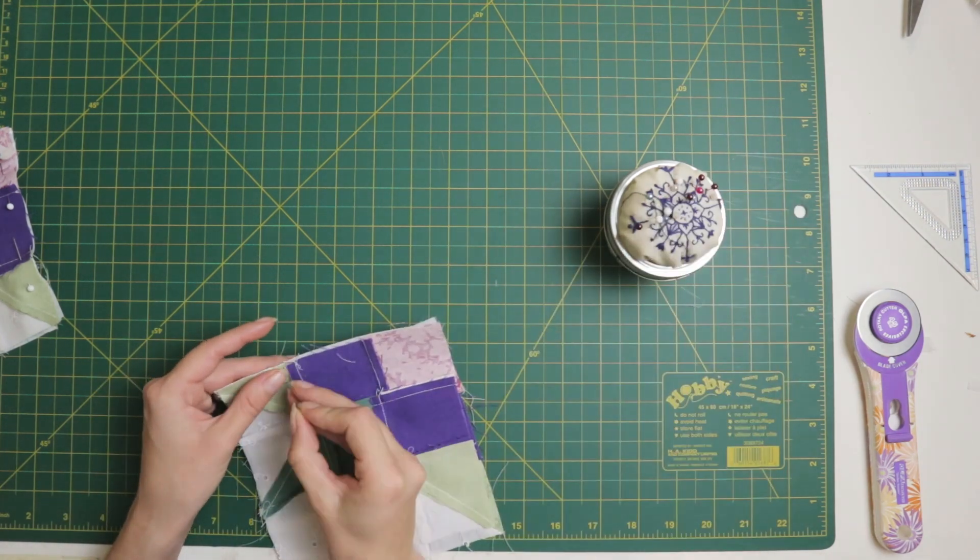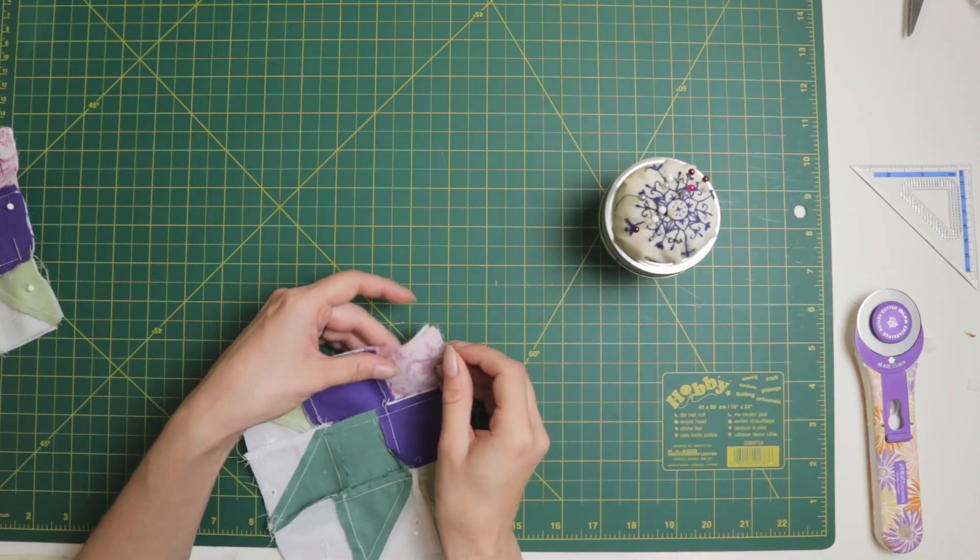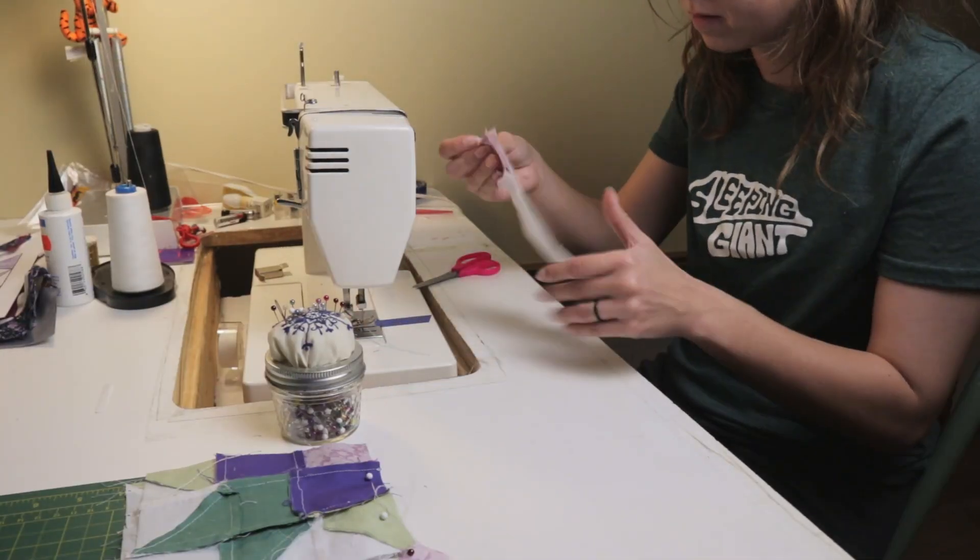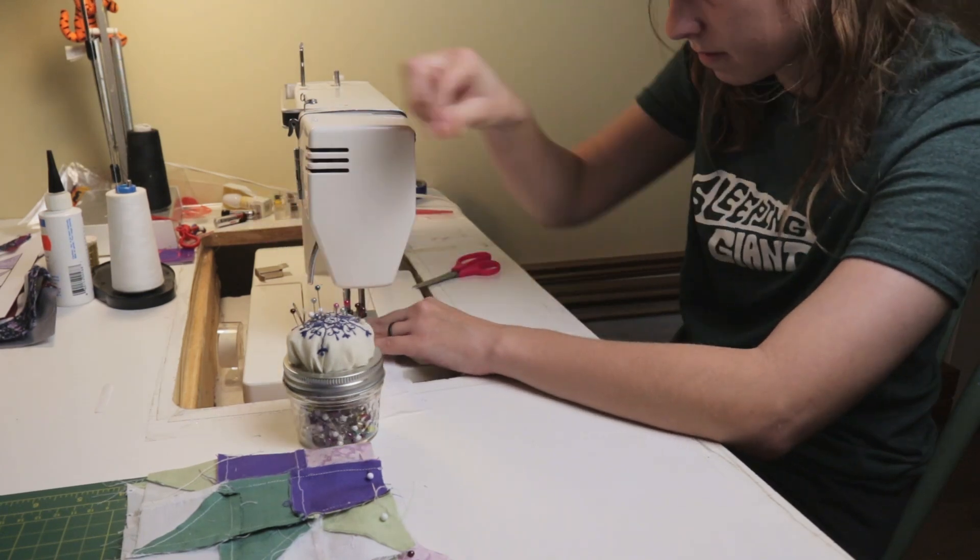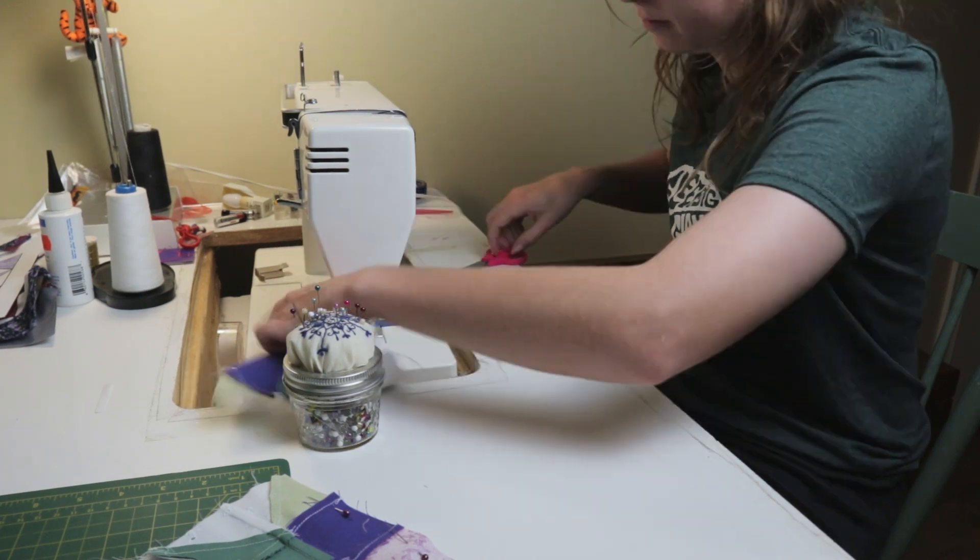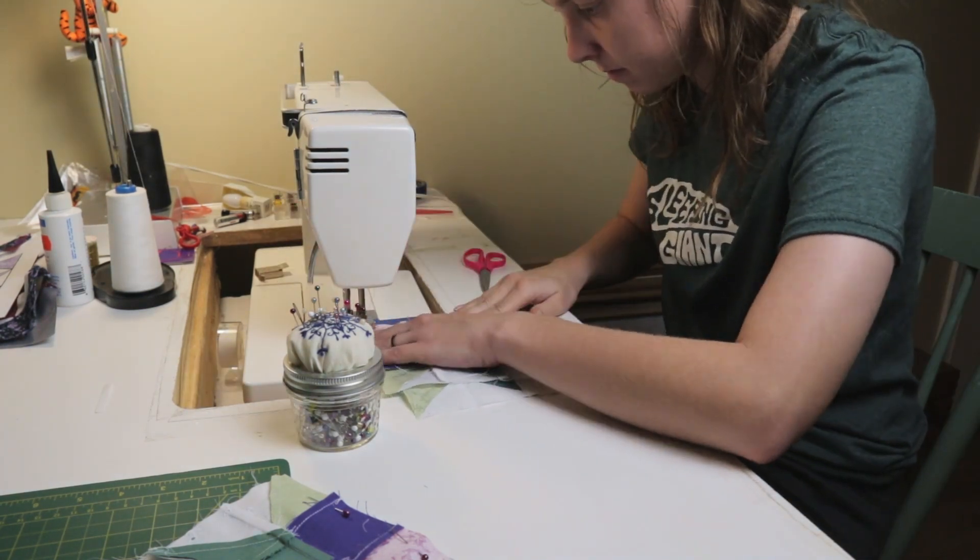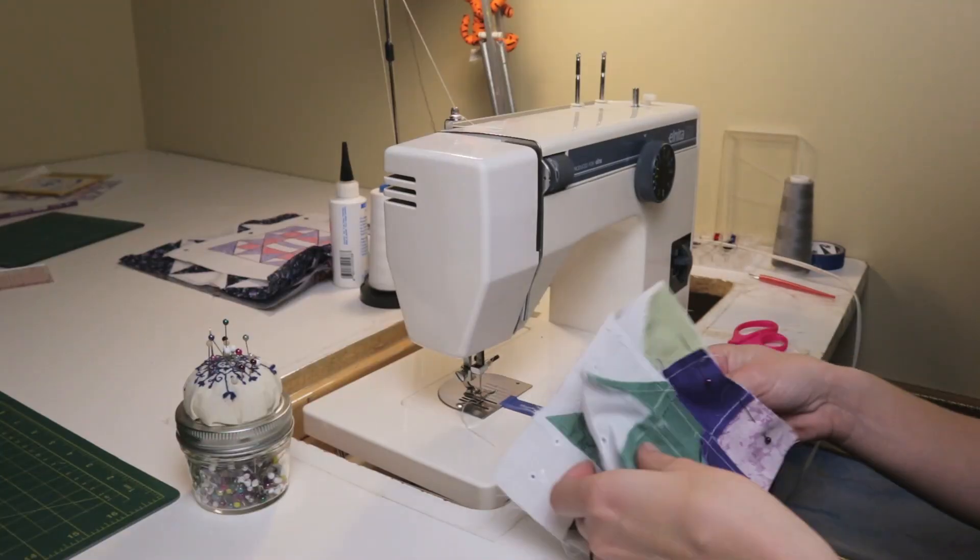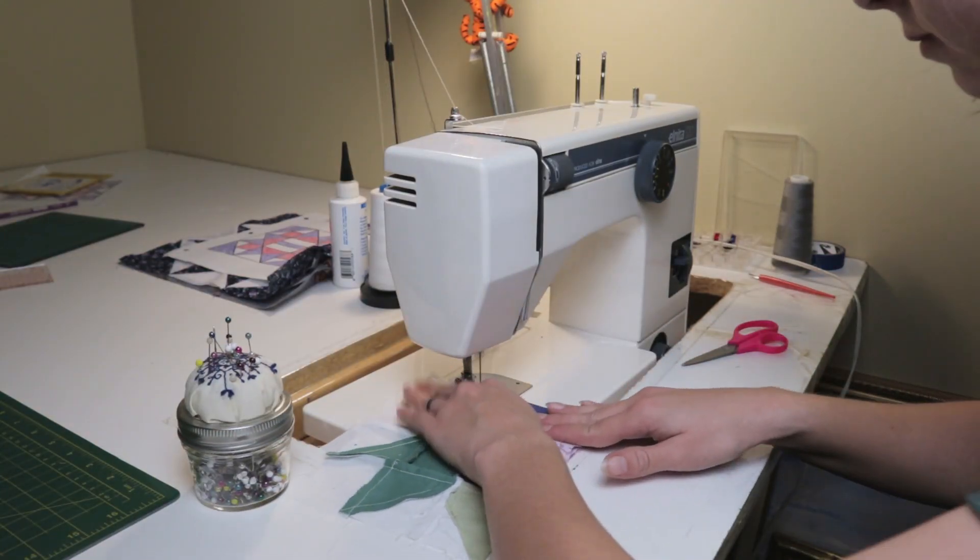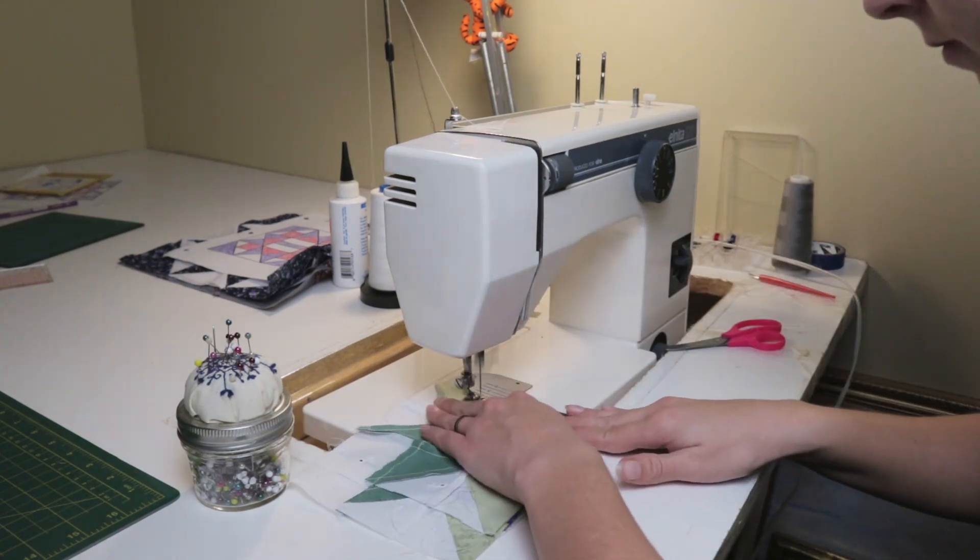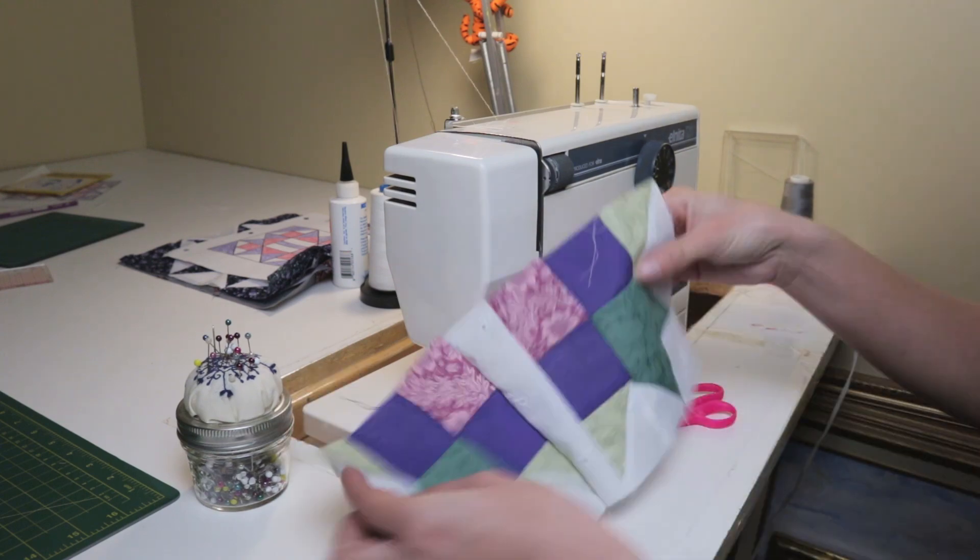With everything pinned, I took my pieces over to the sewing machine and started by sewing the middle row since it was quick and easy. Then I did the top and bottom rows. Does anyone have any tips for preventing your seam allowances from flipping up when you sew across them? Because I feel like no matter what I do, one sneaky seam always flips up without me realizing, and I can never be bothered to unpick and fix it. I always just press it flat and pretend it's not there.